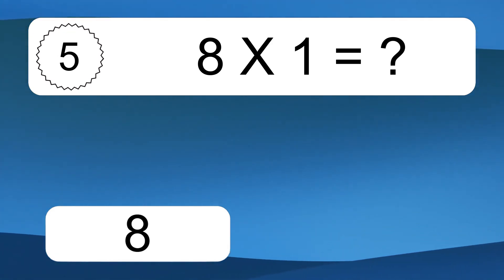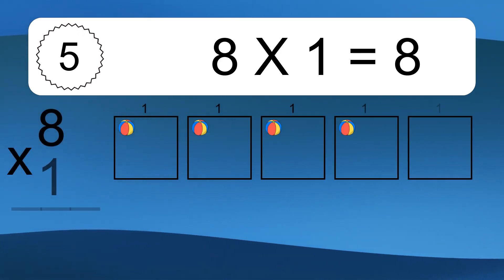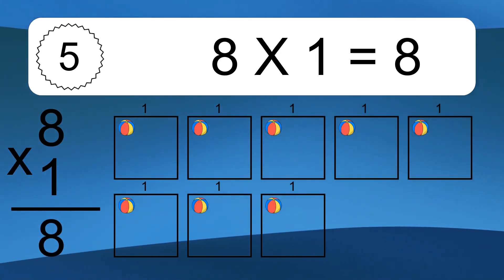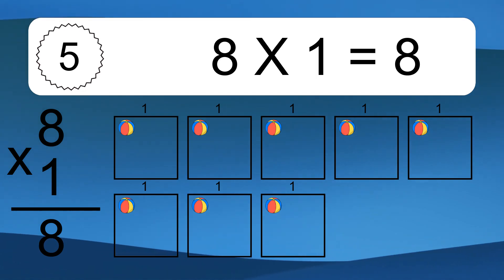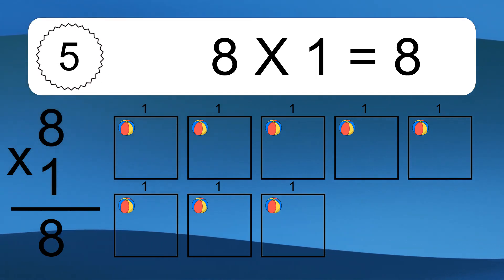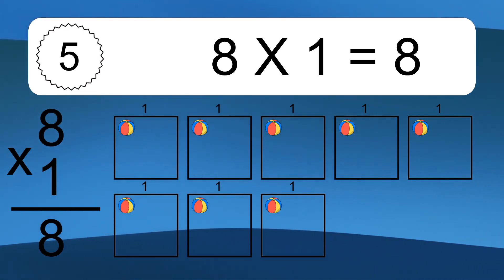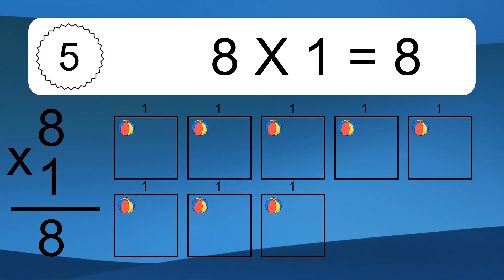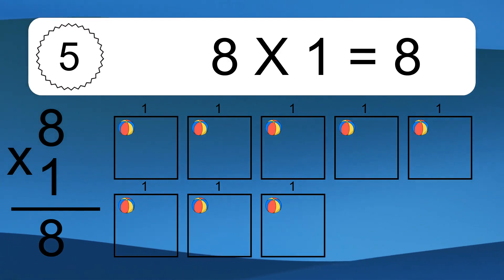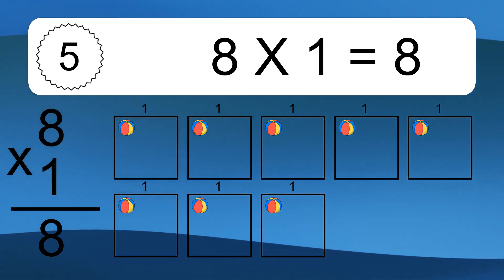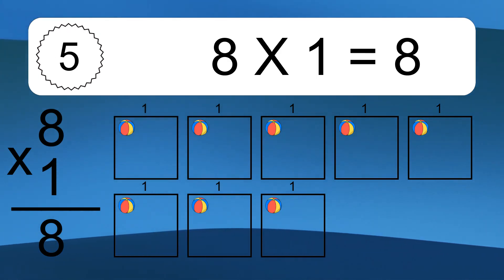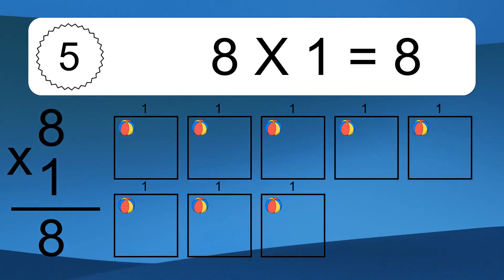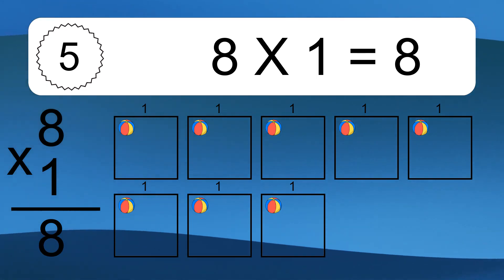8 times 1 equals what? We have 8 boxes, and each box has 1 colorful ball inside. If you count all the balls in all the boxes together, you will have 8 times 1 balls. This equals 8 balls.